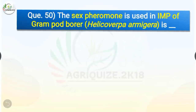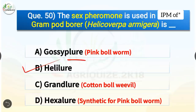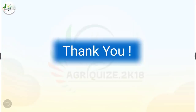Question number 50. The sex pheromone used in IPM of gram pod borer Helicoverpa armigera is which? The options are Gossyplure, Helilure, Grandlure, or Hexalure. The correct answer is option B, Helilure. The sex pheromone used in IPM of gram pod borer is Helilure, whereas for pink bollworm it is Gossyplure, for cotton bollworm it is Grandlure, and for synthetic pink bollworm it is Hexalure. That was all. Thank you friends for watching our video. Hope you find it useful. Please subscribe to our YouTube channel for more such videos. Thank you.